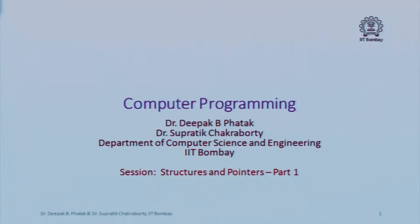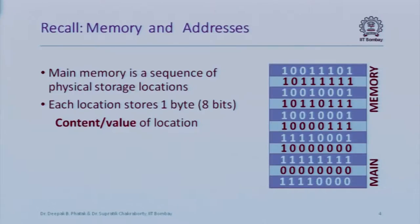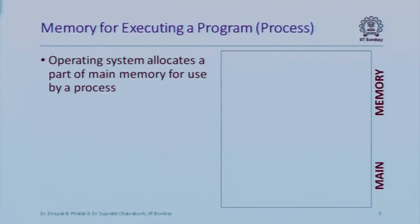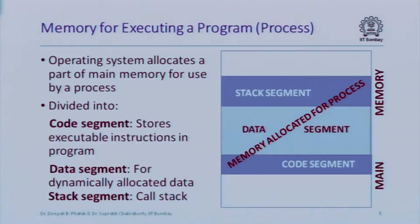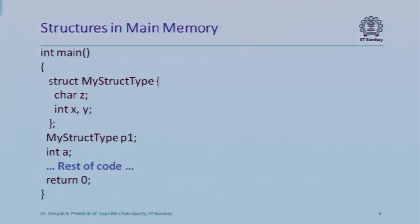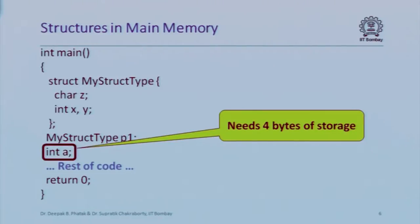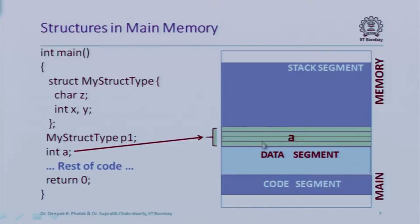This is about structures and pointers. Every location of memory has an address and stores one byte. Every program that is run is allocated some chunk of memory which is divided into stack segment, data segment, and code segment. Here I have a simple program with a structure 'my_struct' type. For a local integer variable 'a', we allocate four bytes in the stack segment.